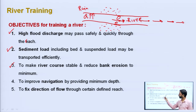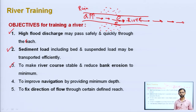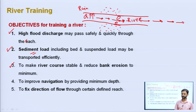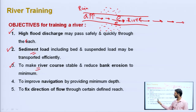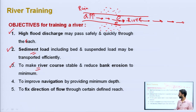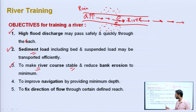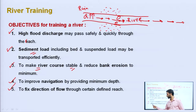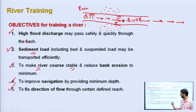Second objective: sediment load, including bed and suspended load, may be transported efficiently so that silting does not occur in the river. Third: to make the river course stable and reduce bank erosion to a minimum by reducing water velocity. Fourth: to improve navigation by providing minimum water depth — this is being done on the river Ganga. Fifth: to fix the direction of flow through a certain defined reach.